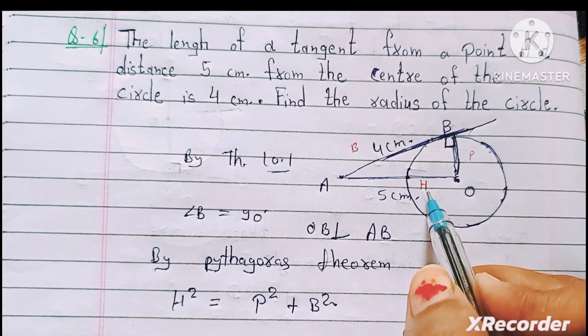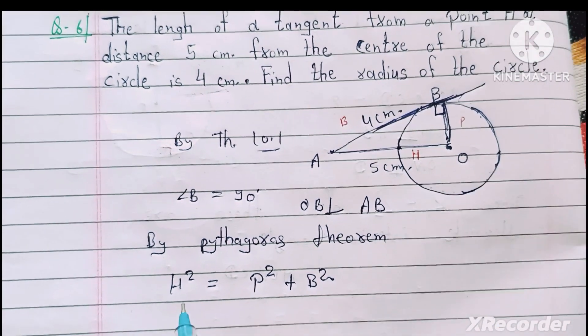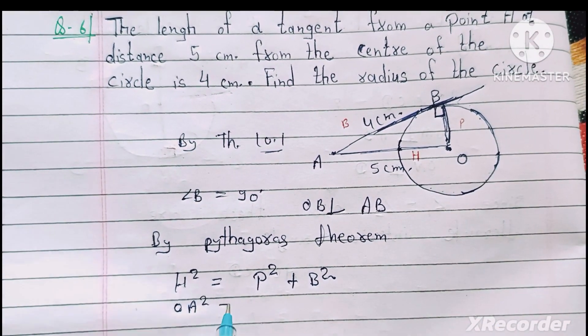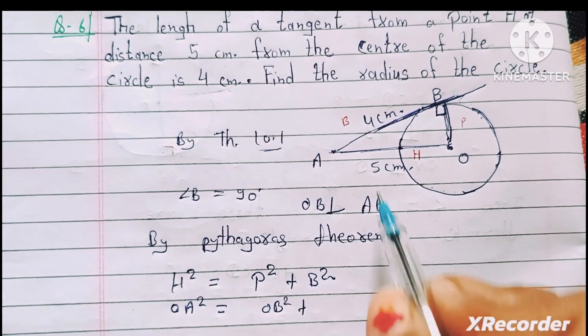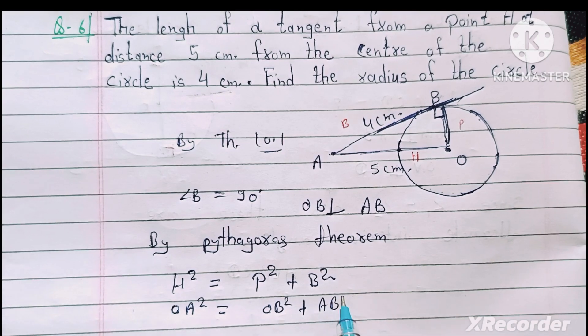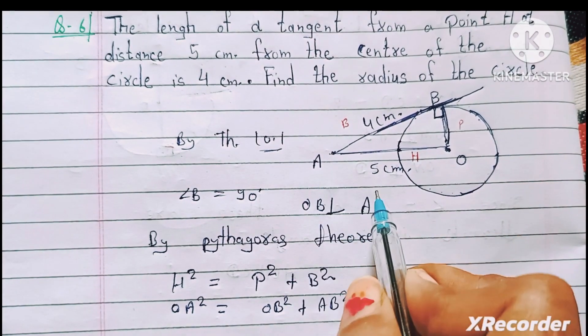Hypotenuse OA square is equal to perpendicular OB square plus base AB square. OA ki value hai 5 square is equal to OB, OB radius find karna hai to isko as it rakh denge.